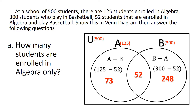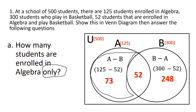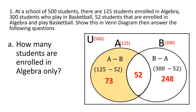First question: how many elements are enrolled in algebra only? The keyword here is 'only,' meaning these are the distinct elements of set A. The answer is the shaded region in this Venn diagram, and that is 73.